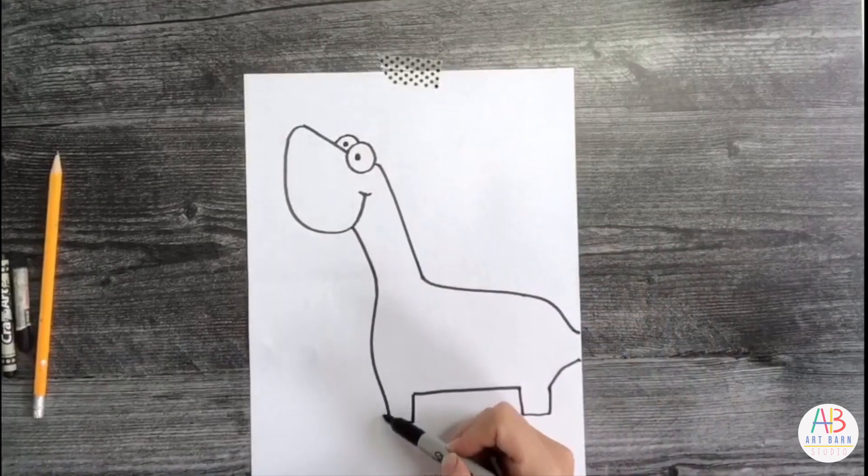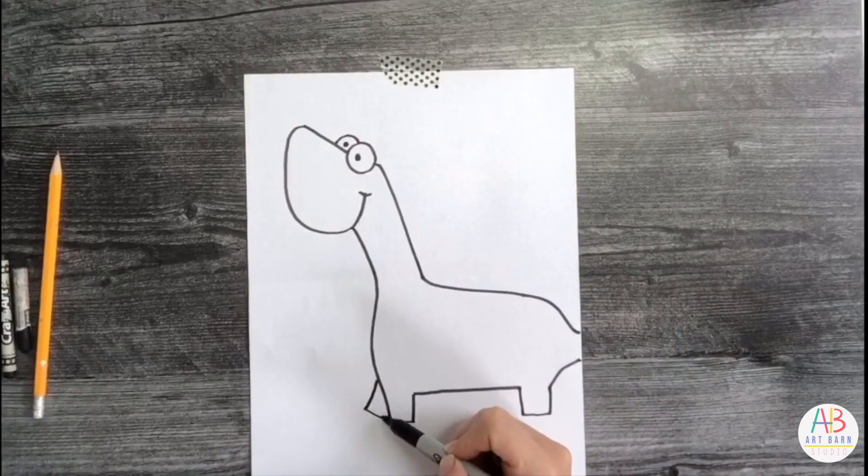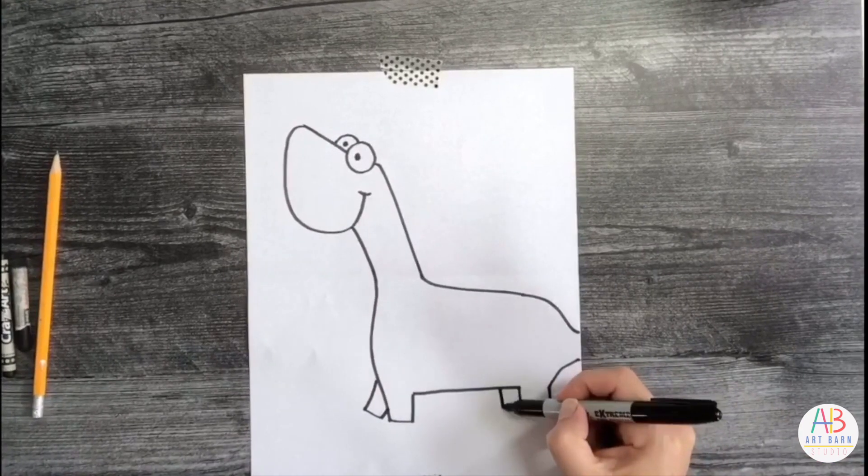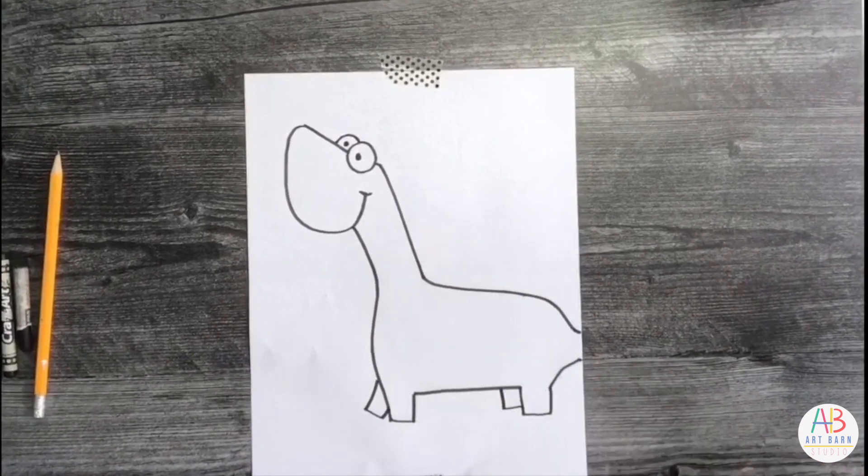And then I'm going to do the two legs that are on the other side of the body. So the first one just has a little part of the leg poking out. It's like a part of a triangle, I mean a rectangle. And then the other part, two lines back here.